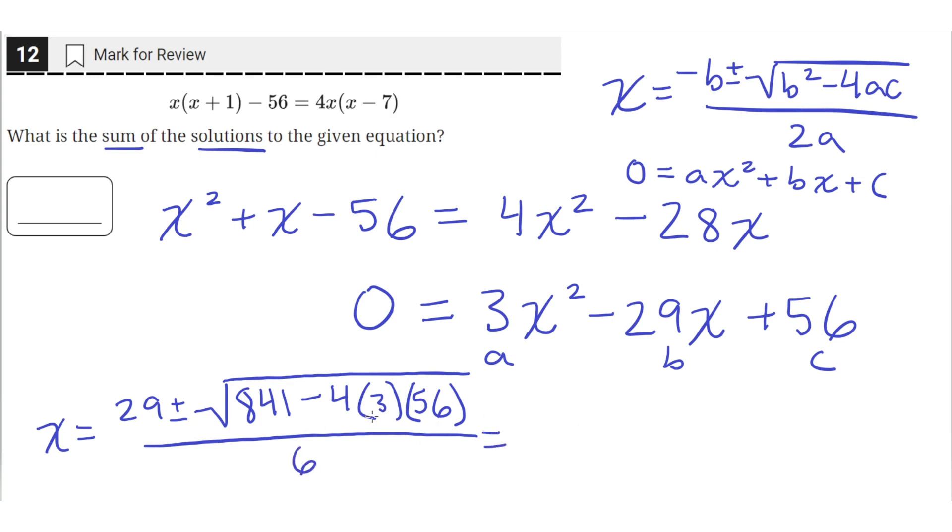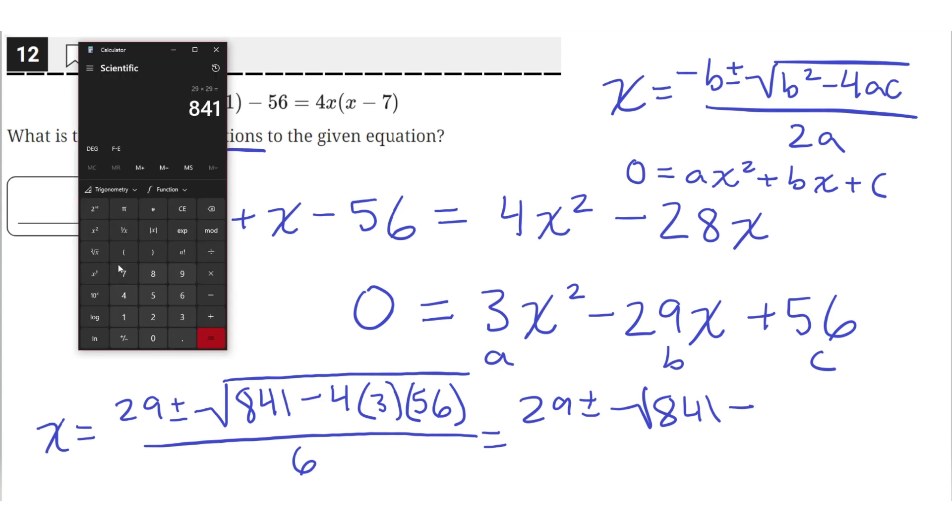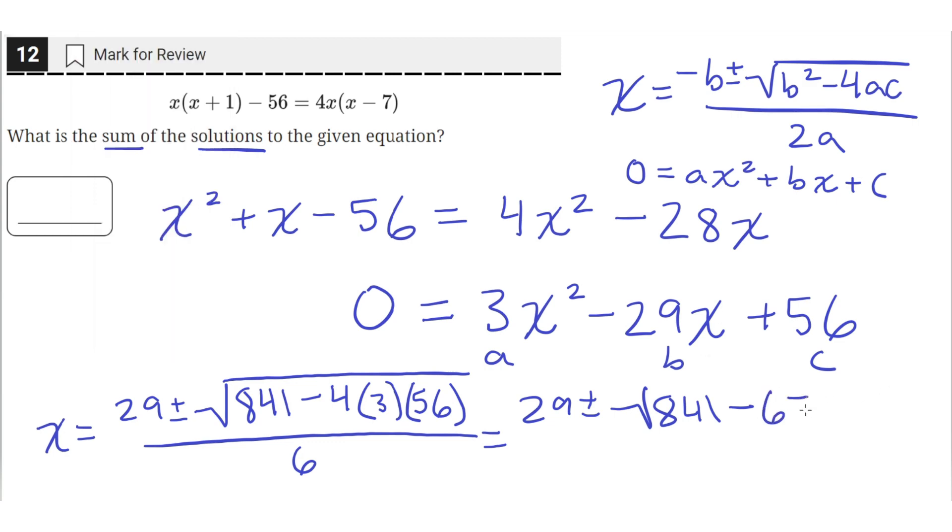We can simplify this down by solving this multiplication. So 29 plus or minus square root of 841 minus... using our calculator, 4 times 3 times 56 is 672. So 672, all over 6.